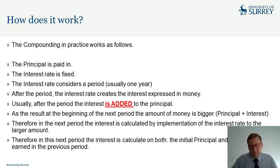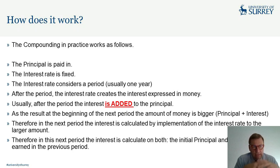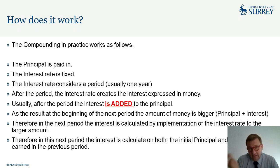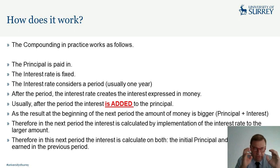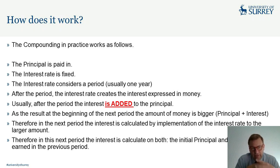How does this work in practice? Say you place £1,000 in a bank account with a fixed interest rate — almost always expressed per annum (per year). After the period, the interest rate generates an interest amount in money terms. If you place £100 at 12 percent per year, the interest rate is 12% but the interest earned is £12.